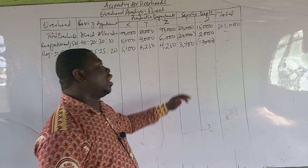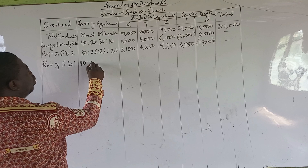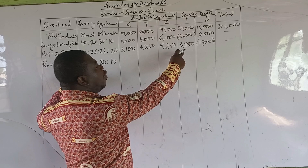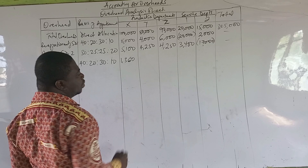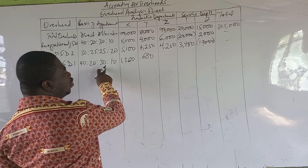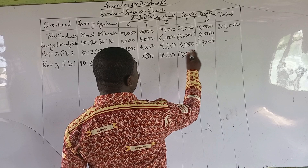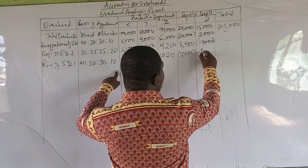Reapportionment of service department 1 again using the same ratio: 40 is to 20 is to 30 is to 10. So 40% of 3,400 comes to department X, which is 1,360. Then 20% of 3,400 comes to department Y, which is 680. Then 30% of 3,400 comes to department Z, which is 1,020. We put the 3,400 in brackets. The last one, 10% of 3,400 goes to department 2, which is 340.